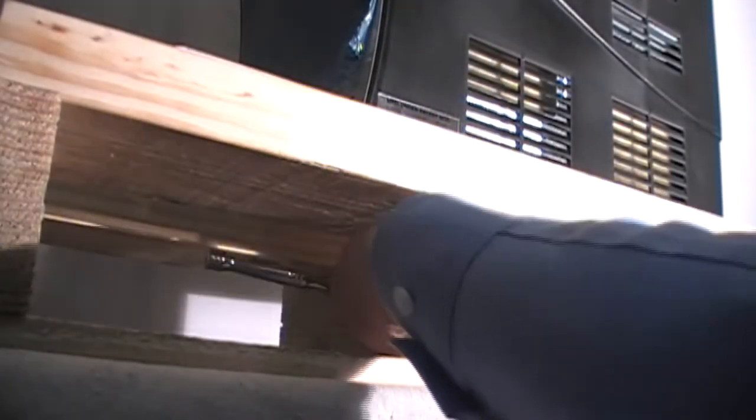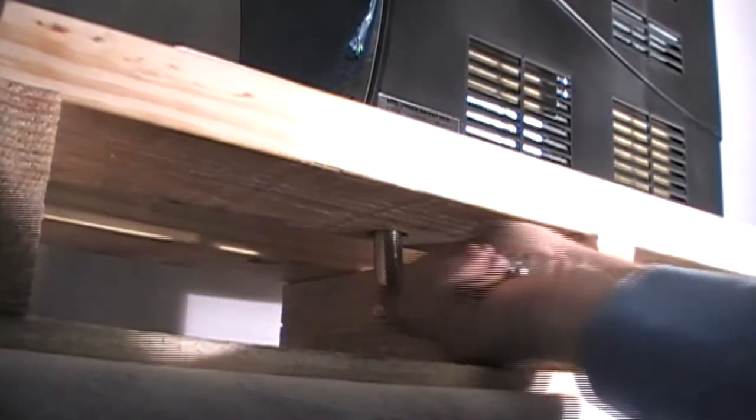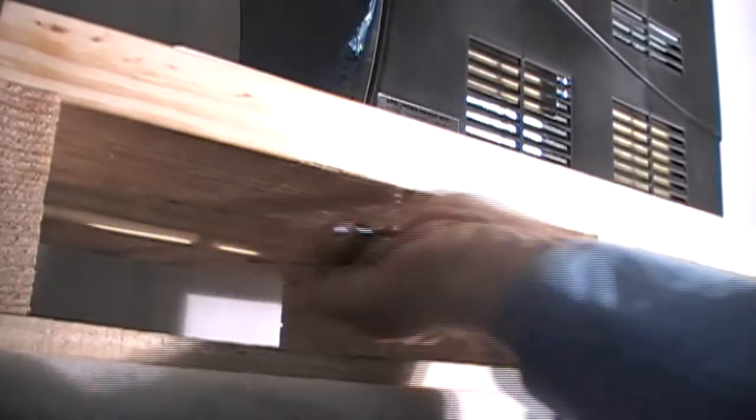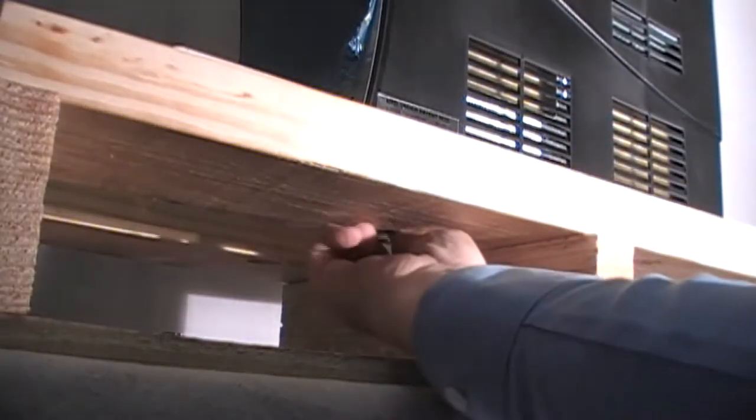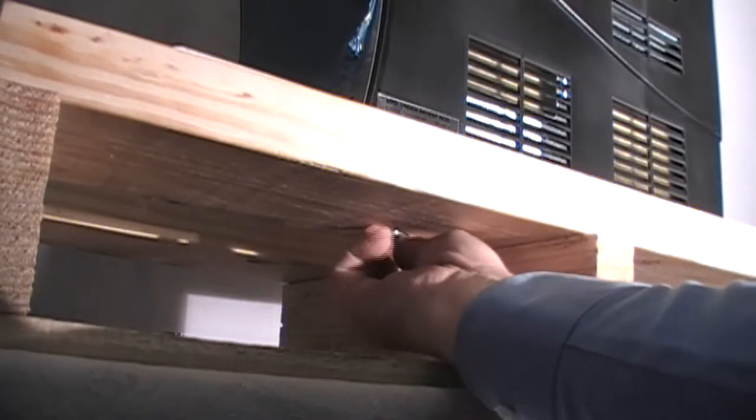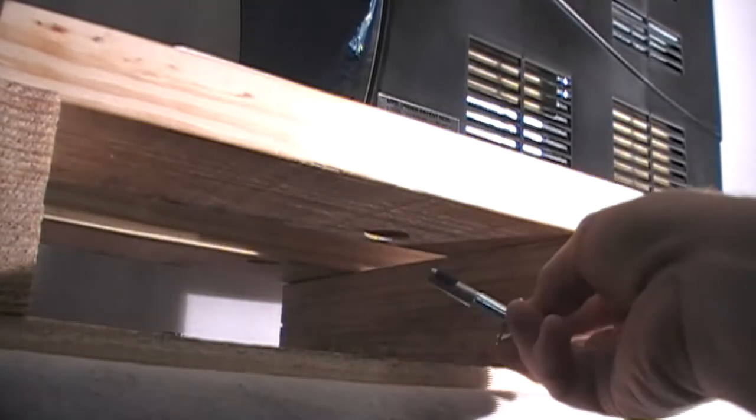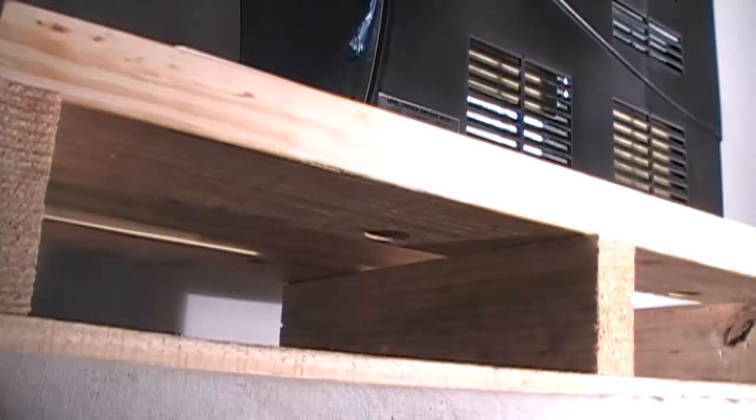To remove the unit from the shipping pallet, locate the hex bolts in each of the four underside corners. Using a 9-16th socket wrench, loosen each of the bolts until they can be removed by hand. Be careful removing the last one so the unit does not slide off the pallet.